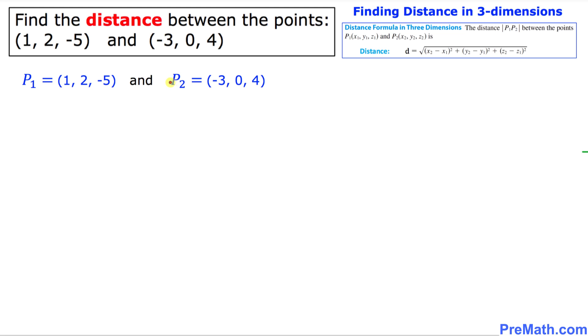And now we are going to calculate the distance between these two points. And here is our distance formula. Before we get started, I am going to call the first point coordinates x1, y1, z1. And the second point coordinates I am going to call x2, y2, and z2.